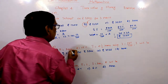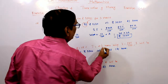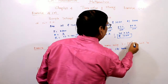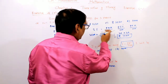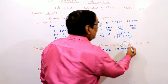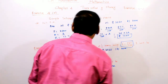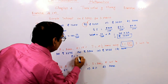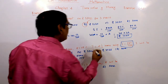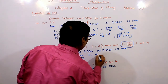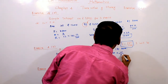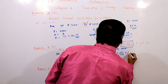Next question: Principal = 5,000, rate of interest = 15%, term = 4.5 years. Use the formula PRT by 100. So: 5,000 into 15 by 100 into 4.5.